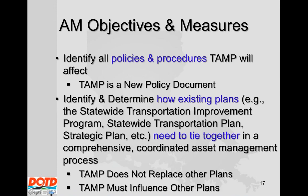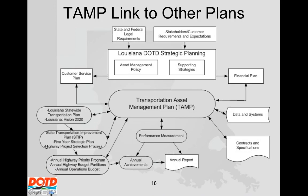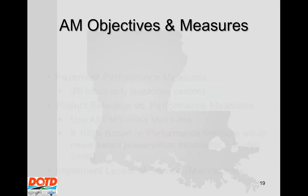When you look at the TAMP, it's basically a new policy document. It talks about how you tie all these different plans together — the STIP, the state long-range plan, and all these things. The TAMP doesn't replace the plans; it influences them. The TAMP is what I call the glue that ties it all together. This diagram shows how our TAMP fits in with other plans.